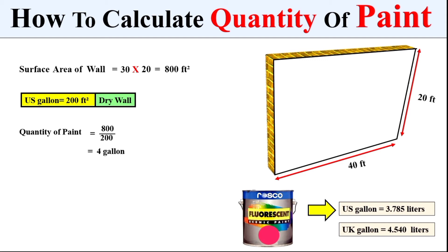From there, we get the total quantity of paint in terms of US gallons. To convert to liters, we multiply by 3.785, since one US gallon contains 3.785 liters. This gives us the total quantity of paint for the dry wall in terms of liters.